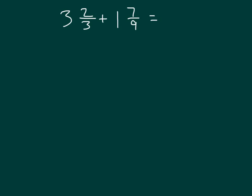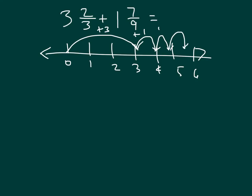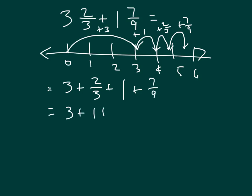Let's show one last problem. Here we have 3 and 2/3 plus 1 and 7/9. On the number line we have 0, 1, 2, 3, 4, 5, 6. For 3 and 2/3, our whole number is first — so we go to 3, that's plus 3. Then plus 1 more for the whole number of the 1 and 7/9. For 2/3, that fractional part, not quite to 5, so we have plus 2/3. And then plus another 7/9. It looks like our answer is in between 5 and 6. We break it apart: 3 plus 2/3 plus 1 plus 7/9, putting together the whole numbers: 3 plus 1 plus 2/3 plus 7/9.